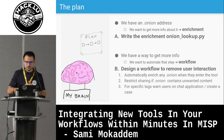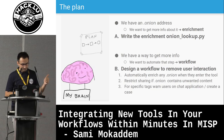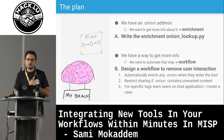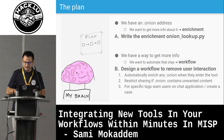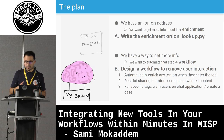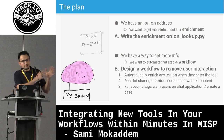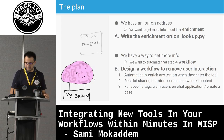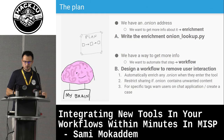The interactions we want to automate: first, automatically enrich any onion when it enters the tool. Second, restrict the sharing if an onion contains unwanted content — on the dark web they host nasty stuff like child exploitation materials, and that's content we don't want to share at all. If we detect an onion is hosting that kind of material, we automatically restrict the sharing. The last step: if a specific tag is added, we create a task in a case management system — I'll show off one of our tools developed at Circle.